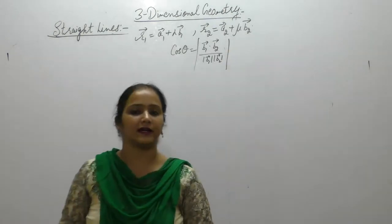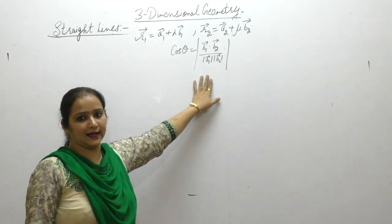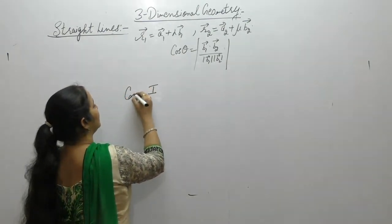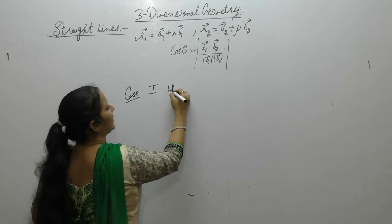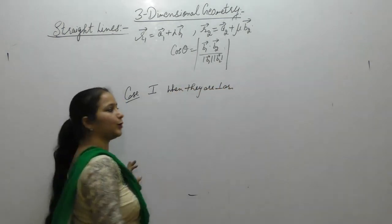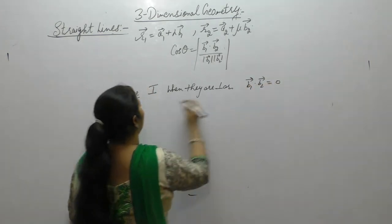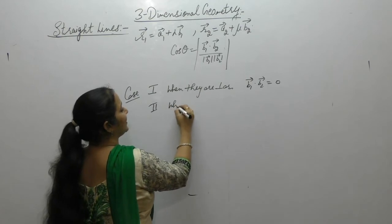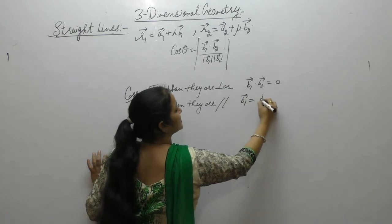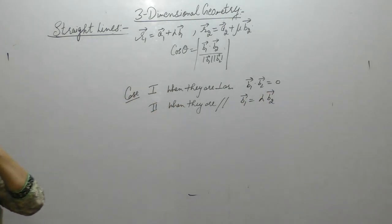If the vector equation of the line is given, we use this formula to find the angle between them. Condition case 1: if the lines are perpendicular, the dot product b1·b2 is zero. Case 2: when the lines are parallel, b1 vector equals lambda times b2 vector, where lambda is any scalar.